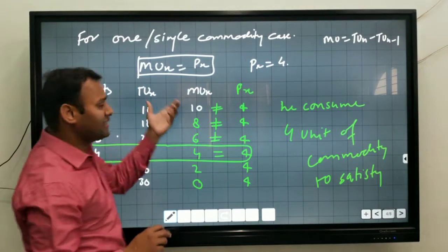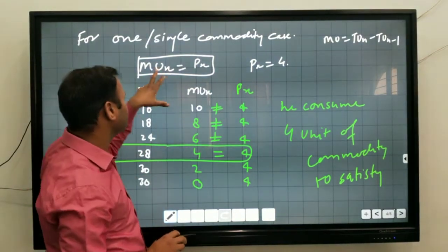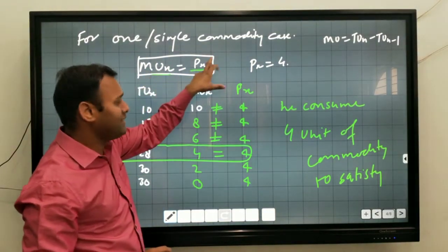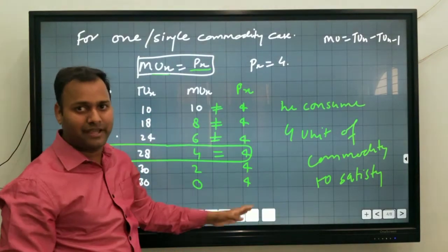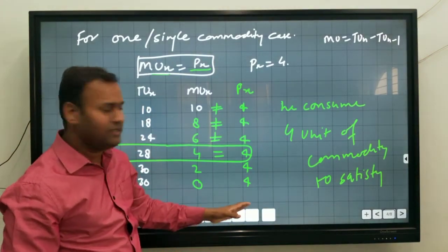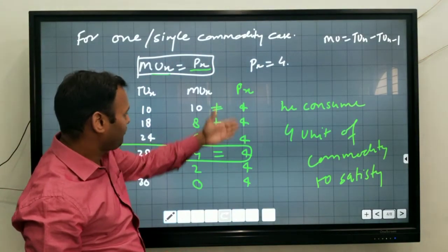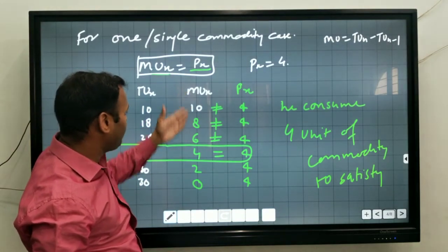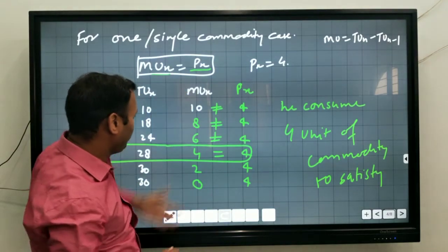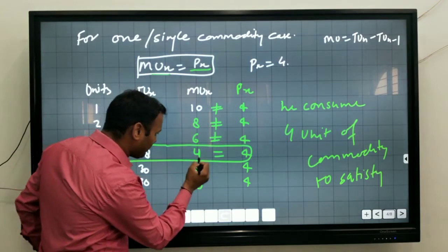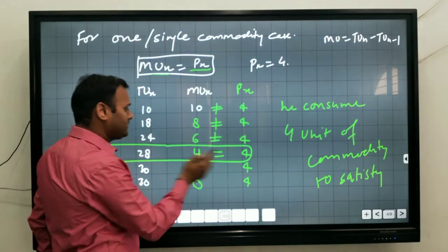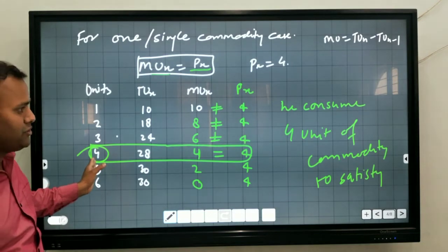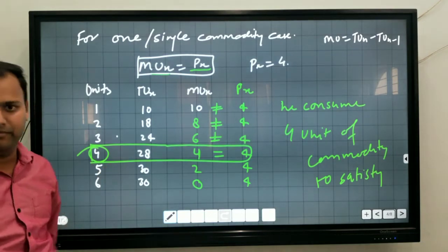How do we identify the equilibrium point? Because the formula states MUX is equal to PX, and PX remains the same at 4 throughout. We calculate MU using the formula, and wherever MU equals 4 — that is the unit of the commodity at which consumer equilibrium is achieved.